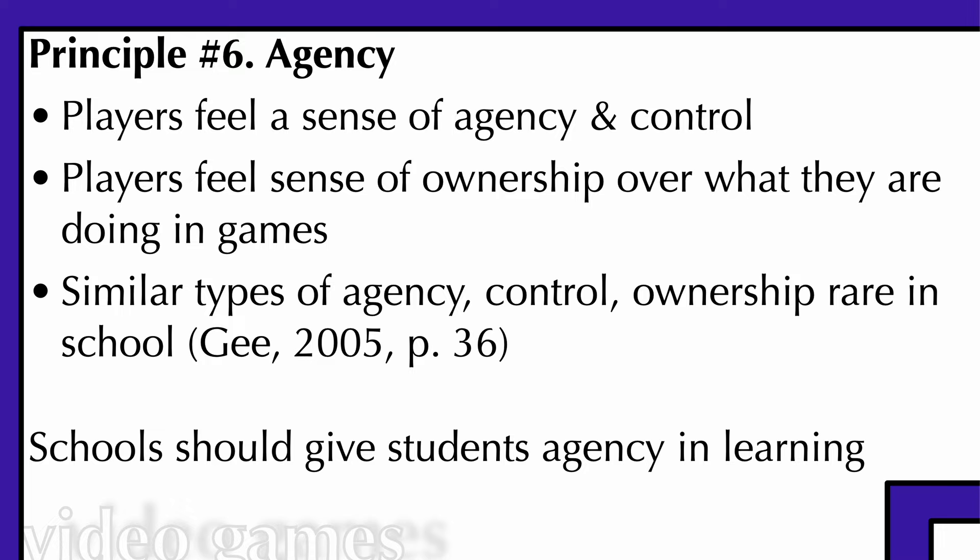Principle six: agency. Players feel a sense of agency and control within a game — a sense of ownership over what they're doing. You're following a path, making decisions within the game, and you feel like you have agency and can control it. Similar types of agency, control, and ownership are rare in schools, especially at the lower levels, where it's a lot about behavior, obedience, and discipline.